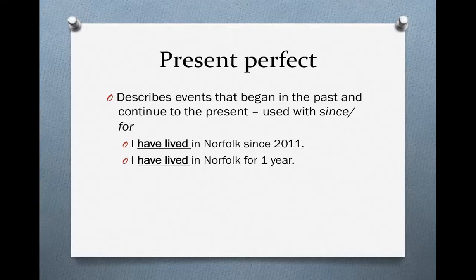Look at the two sentences below: 'I have lived in Norfolk since 2011,' or 'I have lived in Norfolk for one year.' In both cases, the speaker has lived in Norfolk for a certain period of time and still lives in Norfolk now. This is still true in the present, even though it began in the past. Notice how you form the present perfect: it's 'has' or 'have' plus the past participle.